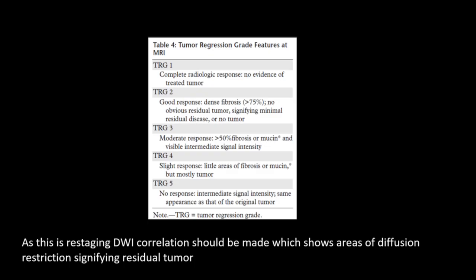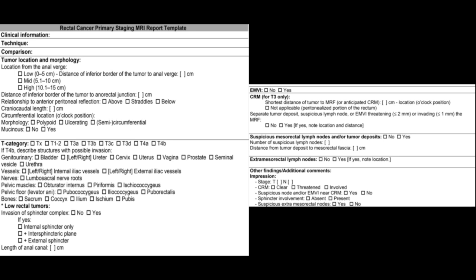Tumor regression grading: Grade 1 — complete radiological response, no evidence of treated tumor. Grade 2 — good response, dense fibrosis greater than 75%, no obvious residual tumor. Grade 3 — moderate response, greater than 50% fibrosis with visible intermediate signal intensity. Grade 4 — slight response, little areas of fibrosis but mostly tumor. Grade 5 — no response, intermediate signal intensity same as that of the original tumor.